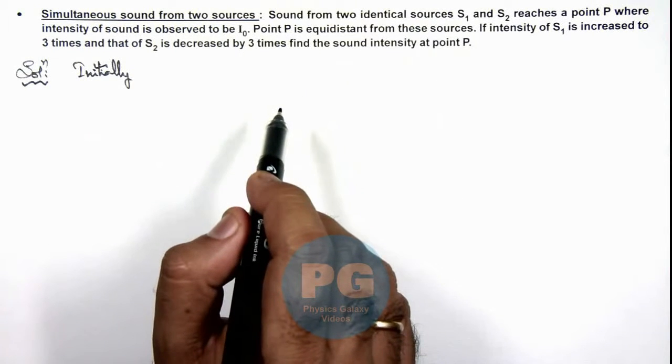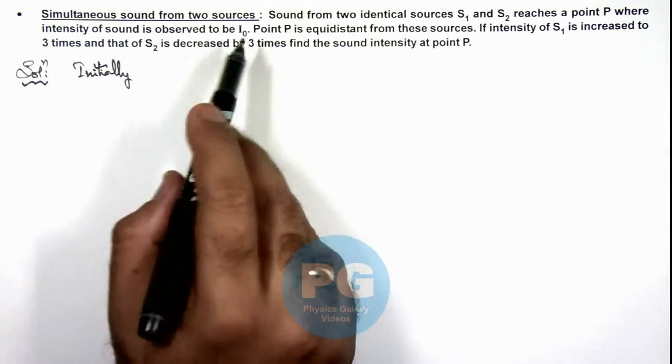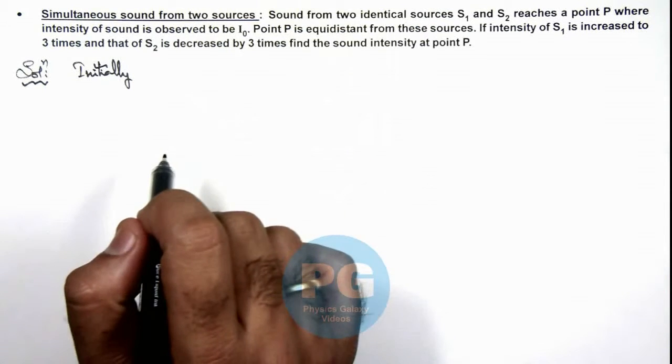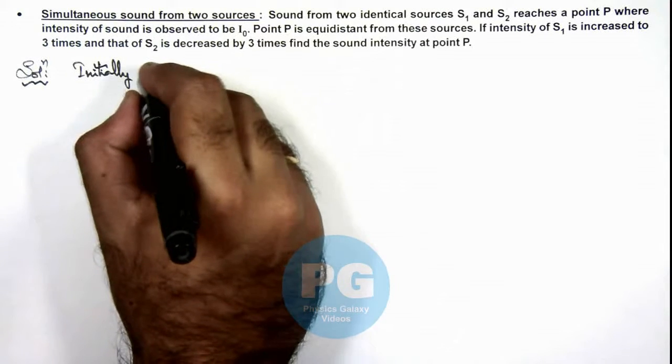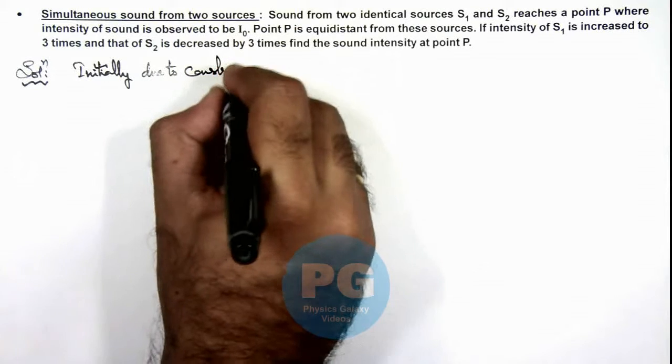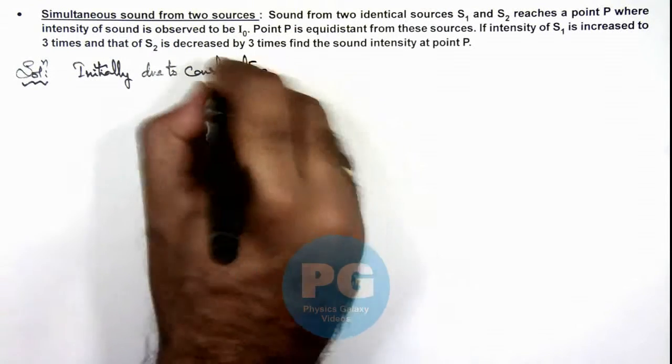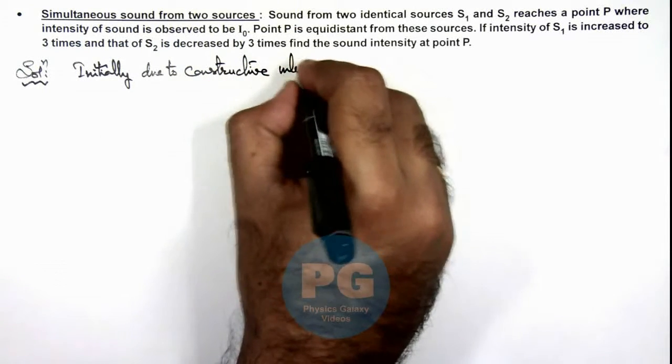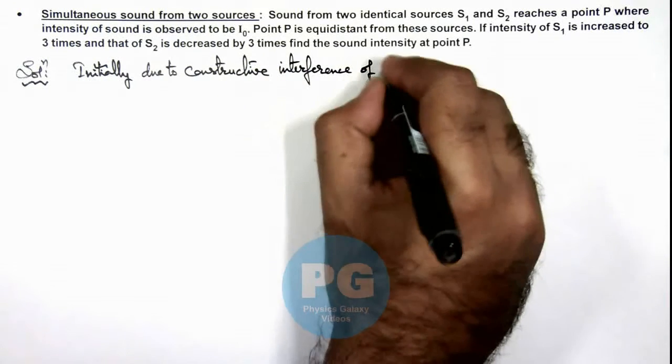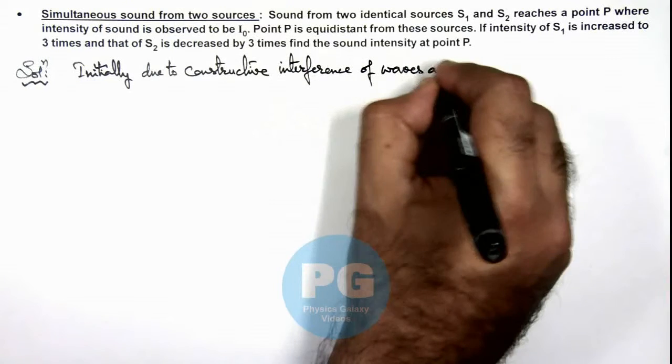If we talk about the interference, it'll be constructive because P is equidistant from these two sources. So initially, due to constructive interference of waves at P...